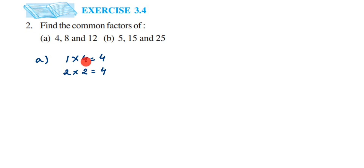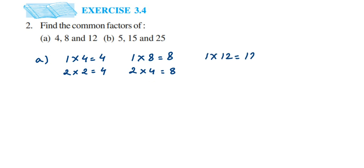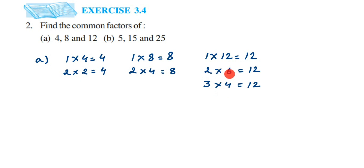For 8: 1 × 8 = 8, and it goes in the 2 times table — 2 × 4 = 8. It doesn't go in the 3 times table, and 4 × 2 is the same as 2 × 4, so we don't repeat it. Checking 5 through 7, it doesn't fit, and 8 × 1 is already written. For 12: 1 × 12, 2 × 6, 3 × 4 — it doesn't go in the 5 times table, and 4 × 3 is the same as 3 × 4, so we stop there.